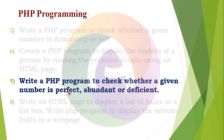What is perfect, abundant, and deficient? The number has factors, and those factors have a sum. The factors are added together. If the sum of the factors equals the number itself, that is a perfect number.